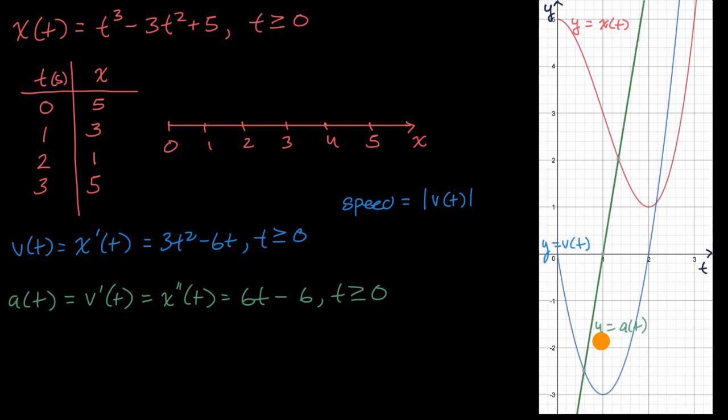And we can graph that as well. We would see right over here, this is y equals acceleration as a function of time. You can see at time equals zero, our acceleration is quite negative. It is negative 6. And then it becomes less and less and less negative. And then our acceleration actually becomes positive at t equals one.